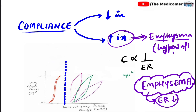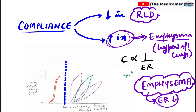On the other hand, all restrictive lung diseases decrease the compliance of the lungs, resulting in hypoinflated lungs.